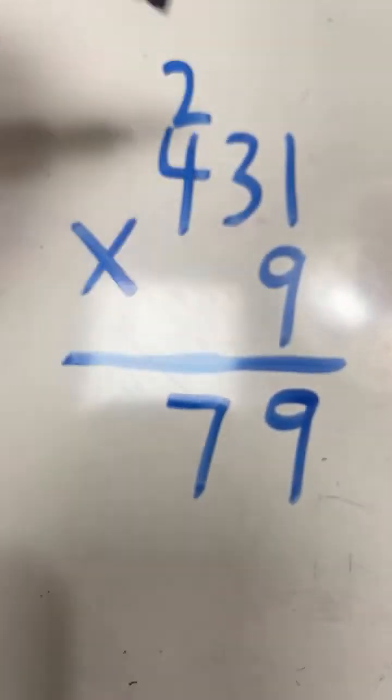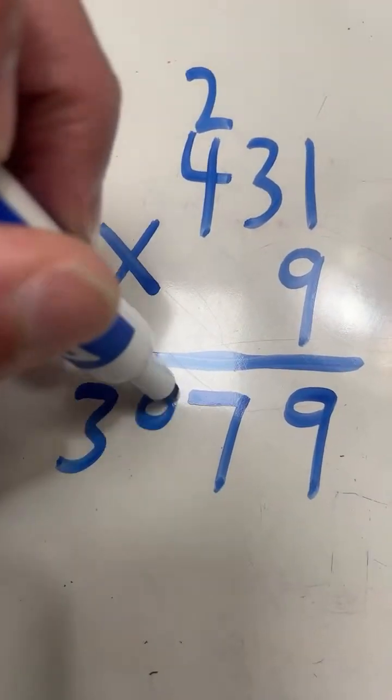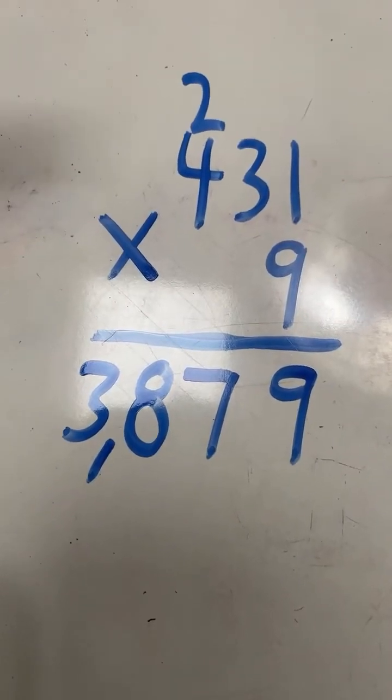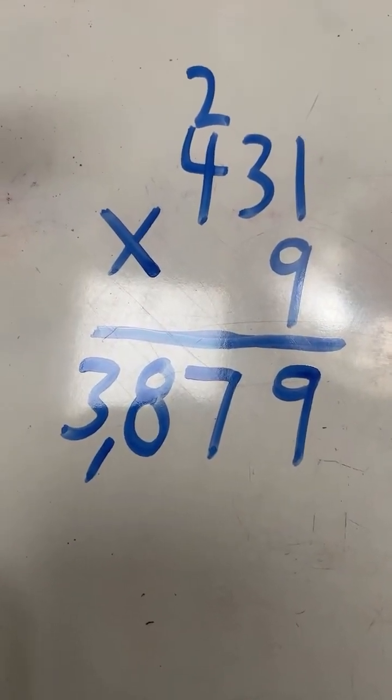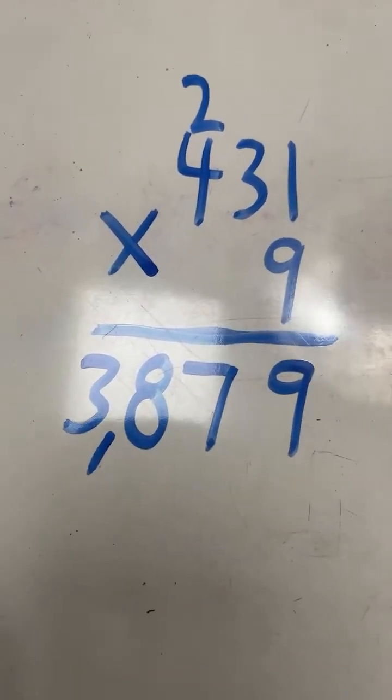4 times 9 equals 36 plus 2 equals 38. And we have our final answer. 431 times 9 equals 3,879.